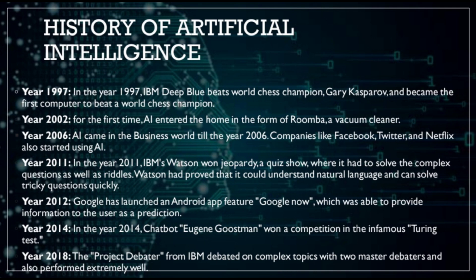In the year 2011, IBM's Watson won Jeopardy!, a quiz show where it had to solve complex questions as well as riddles. In the year 2012, Google launched an Android app feature called Google Now, which was able to provide information to the user as a prediction. In the year 2014, chatbot Eugene Goostman won a competition in the famous Turing Test. In the year 2018, the Project Debater from IBM debated on complex topics with two master debaters and performed extremely well.